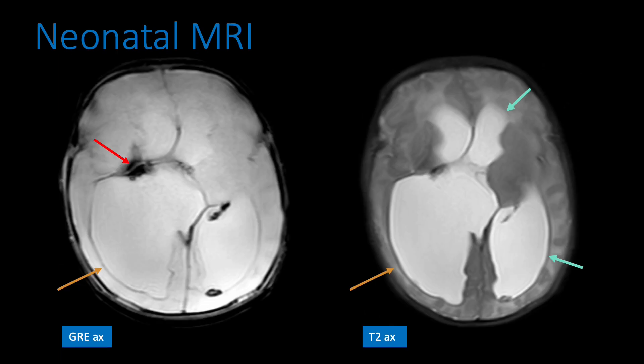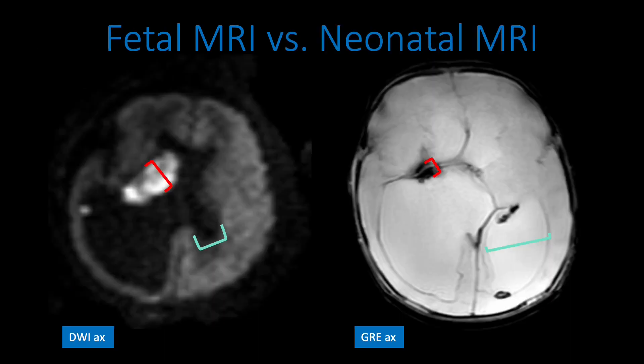Neonatal MRI confirmed fetal MRI findings and demonstrated progression of germinal matrix hemorrhage over time. Axial GRE and T2-weighted images show marked right ventriculomegaly with porencephalic changes and moderate left ventriculomegaly. Blooming signal on axial GRE demonstrates the extent of intraparenchymal hemorrhage. Comparison images showing the fetal axial DWI and neonatal axial GRE demonstrate decreased size of intraparenchymal hemorrhage but progression of ventriculomegaly between time points.